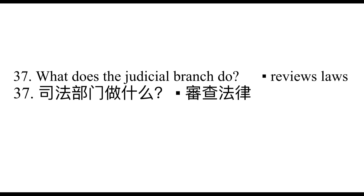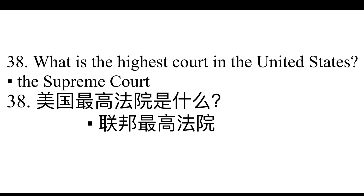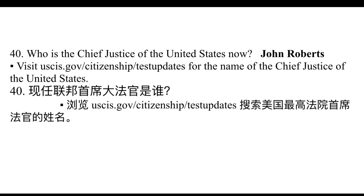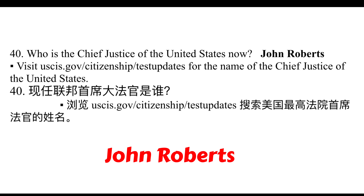What does the Judicial Branch do? Reviews laws. What is the highest court in the United States? The Supreme Court. How many justices are on the Supreme Court? 9. Who is the Chief Justice of the United States now? John Roberts.